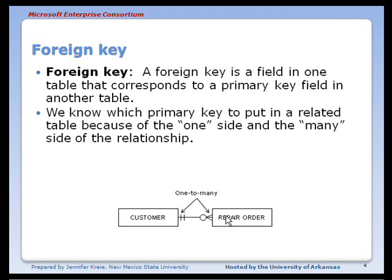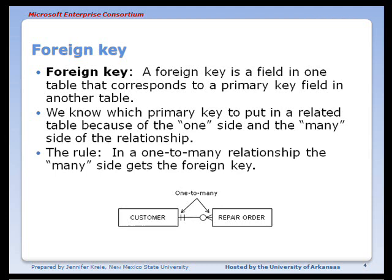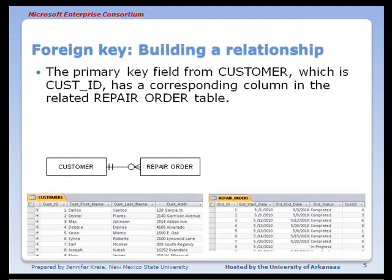Customer is on the one side of a one-to-many relationship with repair order. The rule is: in a one-to-many relationship, the many side gets the foreign key. So repair order gets the foreign key column. The primary key field from customer, which is Cust_ID, has a corresponding column in the related repair order table.